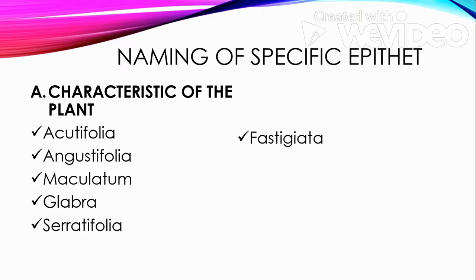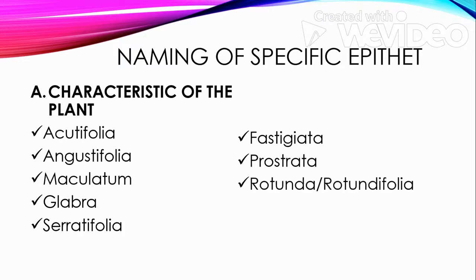Fastigiata means the plant is tall, slender, and upright. Prostrata means the plant is creeping. And rotunda, or rotundifolia, means the leaves are round-shaped.